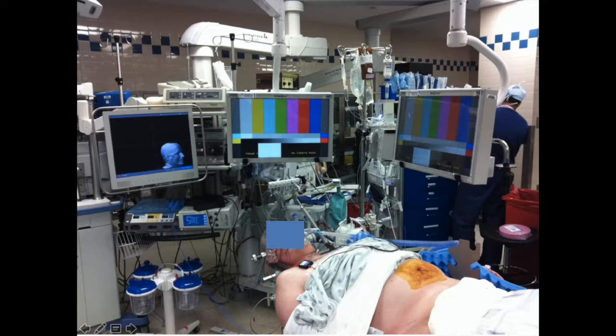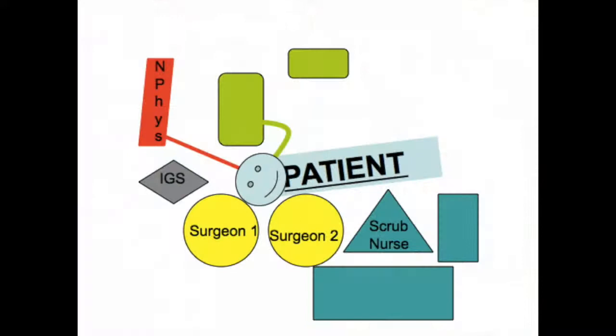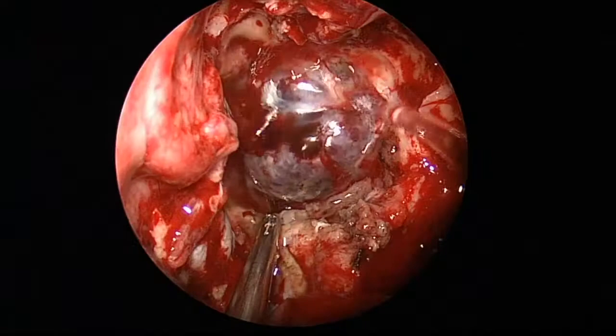These are our standard setup in the operating room, with the patient supine and the head slightly turned towards the operating surgeons. The two monitors are placed ergonomically across each surgeon, with the ENT surgeon placed at the top of the head. The OR setup schematic shows the two surgeons, the patient, the two monitors, neurophysiology, image guidance, and the scrub tech.